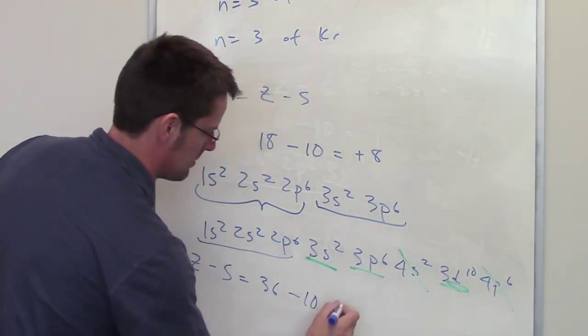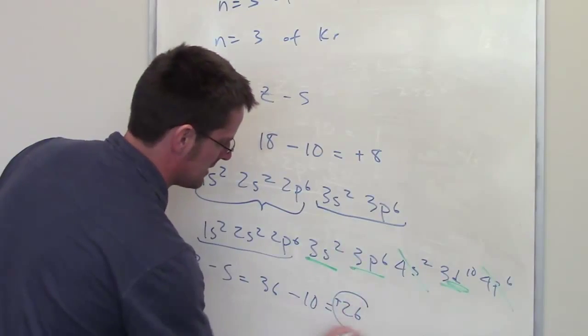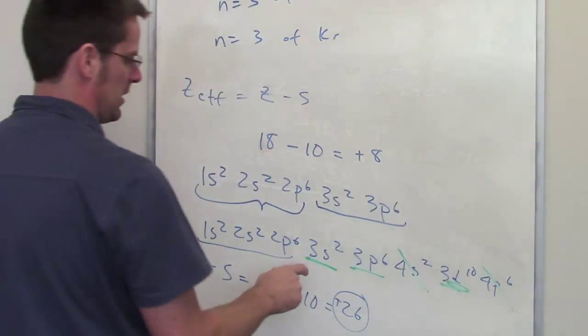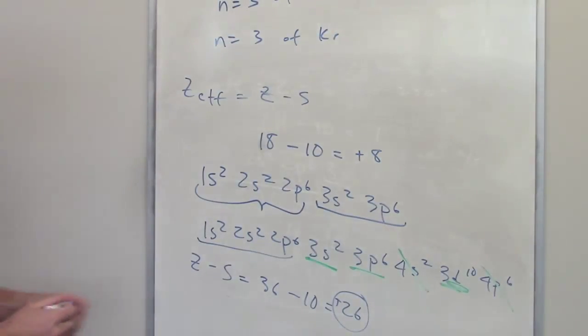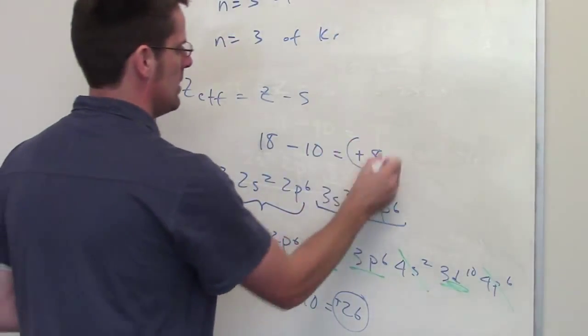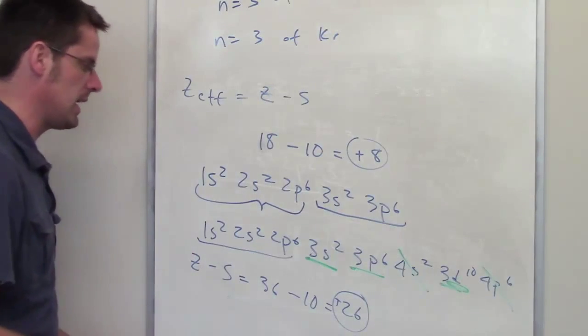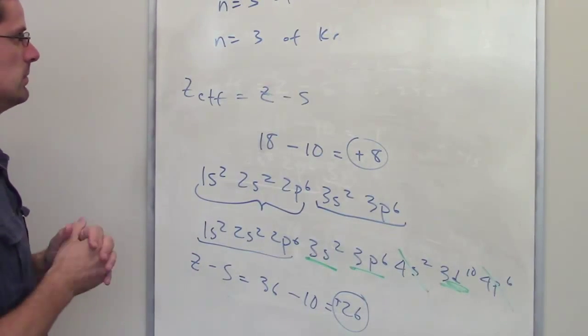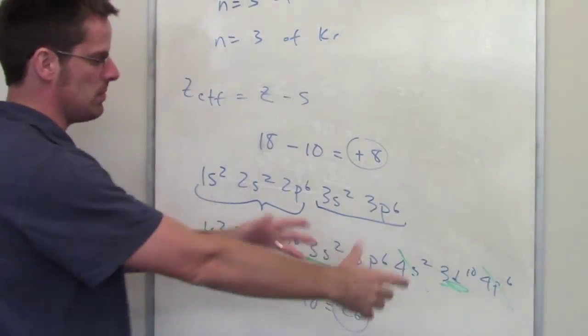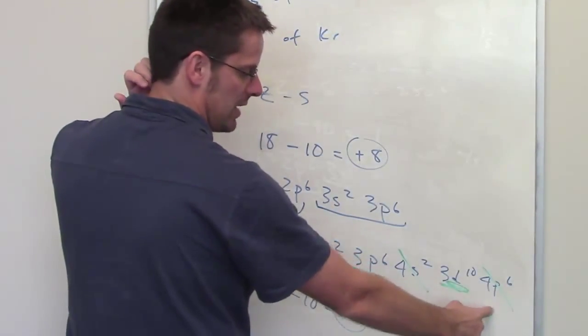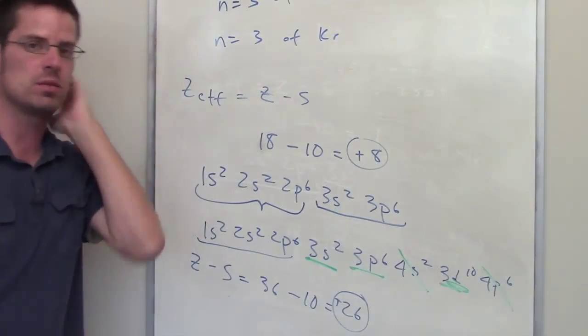All of these combined is 2 plus 2 plus 6 equals 10, so 36 minus 10 is going to be equal to 26. That is the amount of Z-effective that krypton's electrons at energy level 3 are going to be feeling, so krypton is going to be much much higher at energy level 3 than argon. Now if you were to ask the Z-effective of the outermost electrons in krypton, those in energy level 4, that would be a different story.